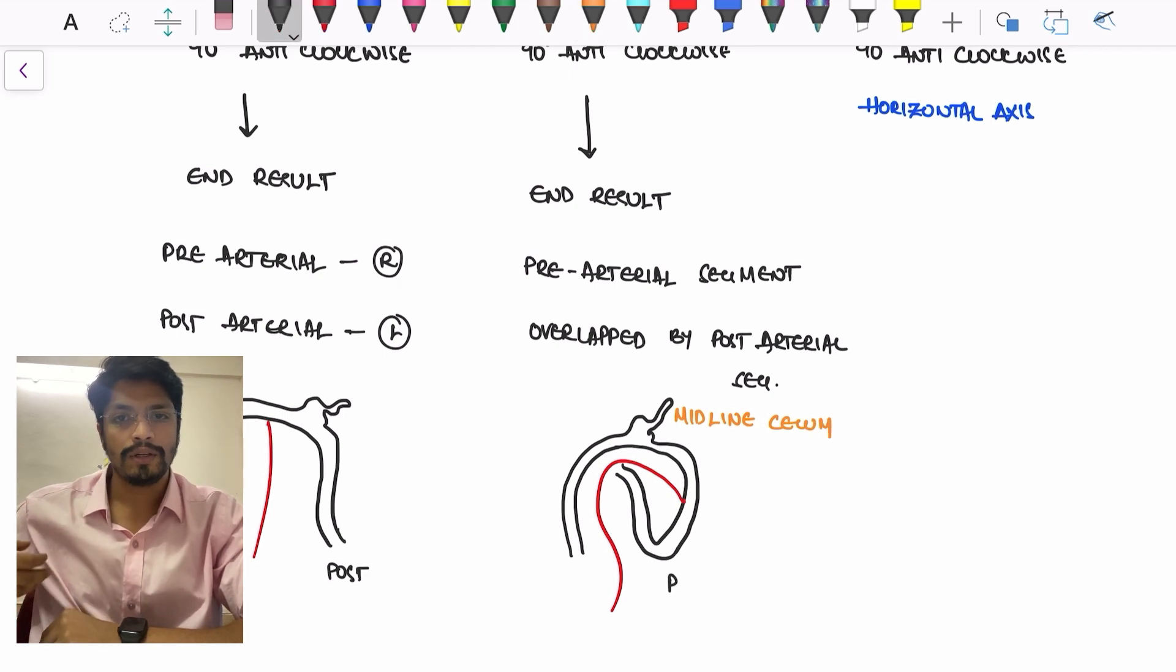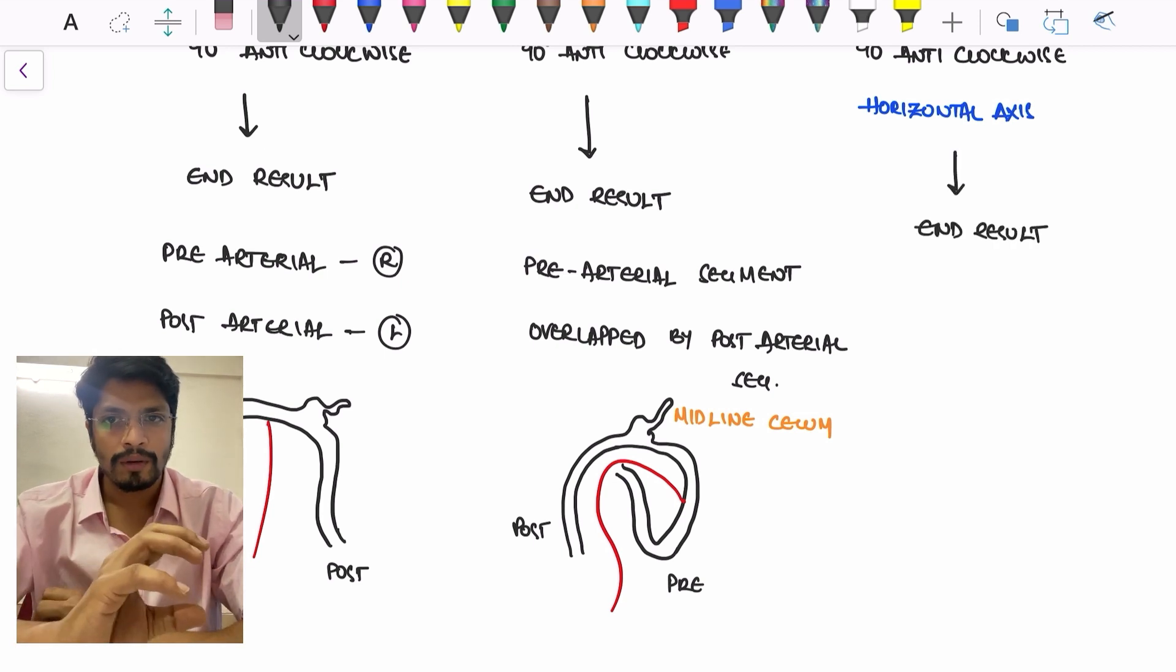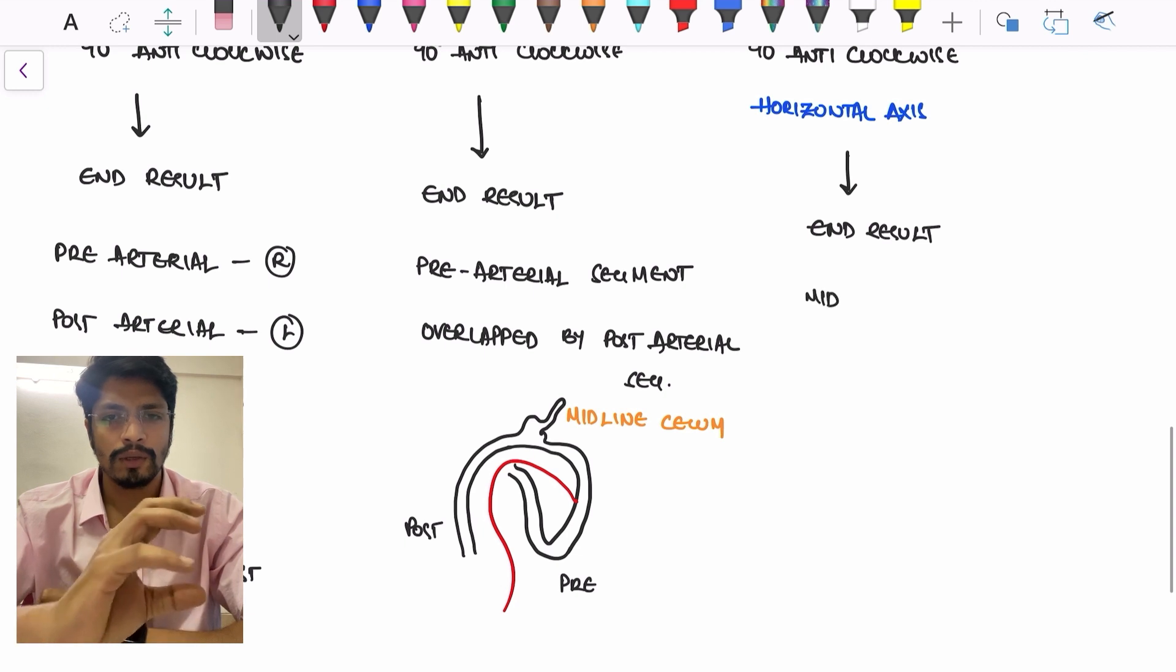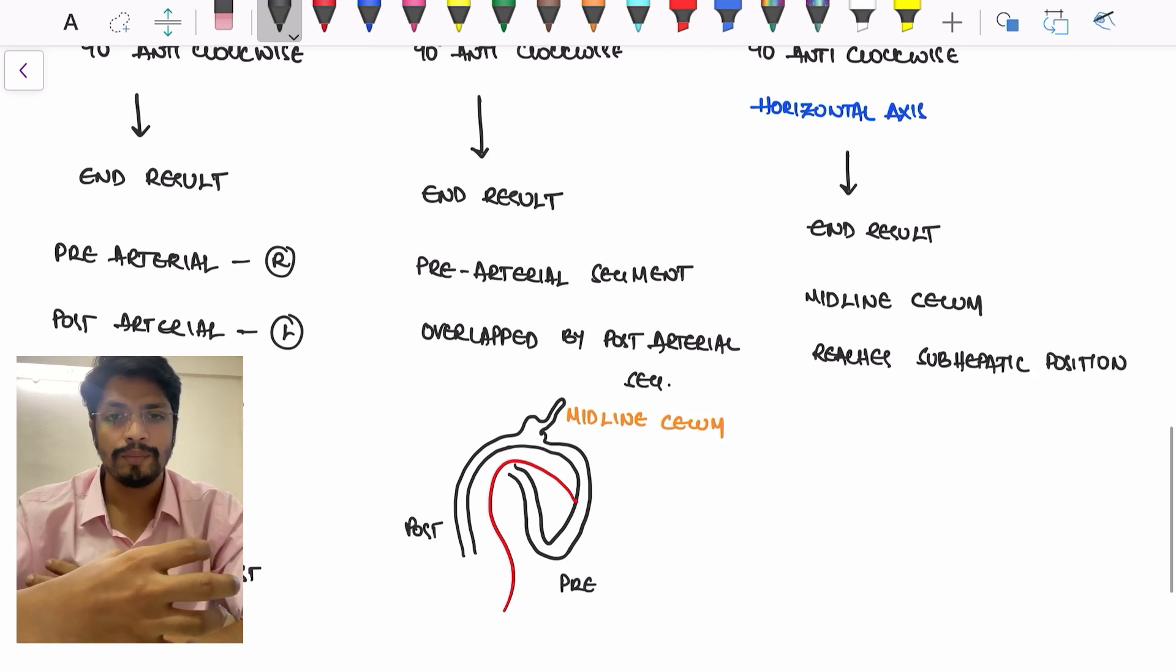The end product will be the midline cecum reaches the sub-hepatic position, and due to the differential posterior abdominal wall growth, this sub-hepatic cecum will reach the right iliac fossa. This is the normal mid-gut rotation, which gives an end result of the small intestine being overlapped by the large intestine, and the right iliac fossa will be having cecum along with the IC junction.